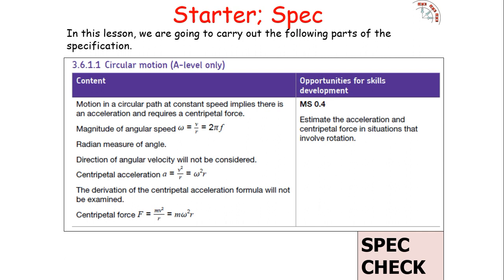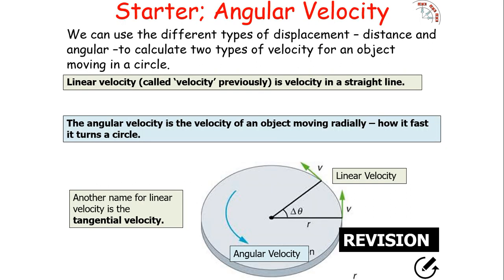We're looking at motion in a circular path, understanding acceleration, linking it to centripetal forces, working out the measure of angular speed, and understanding how radians are used in measurements of angles. We'll then look at centripetal acceleration and centripetal force in upcoming lessons.